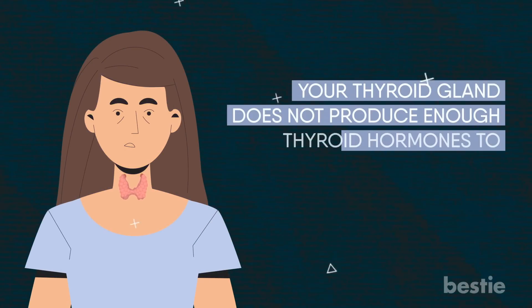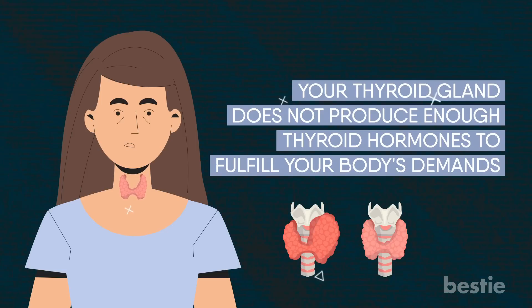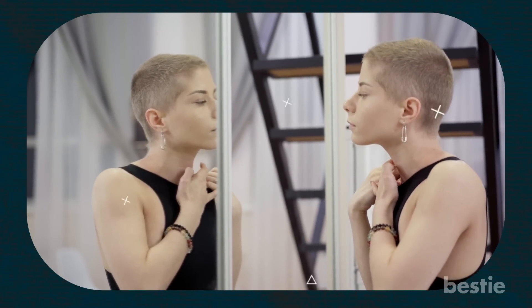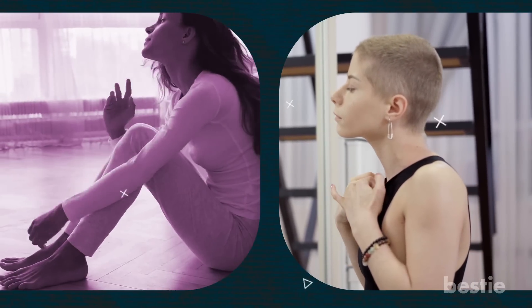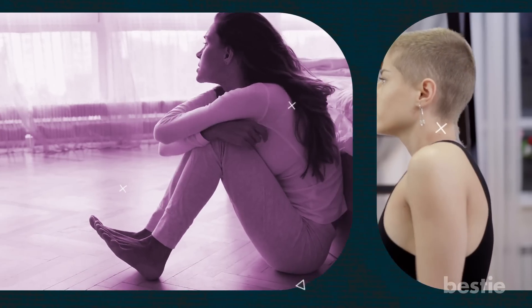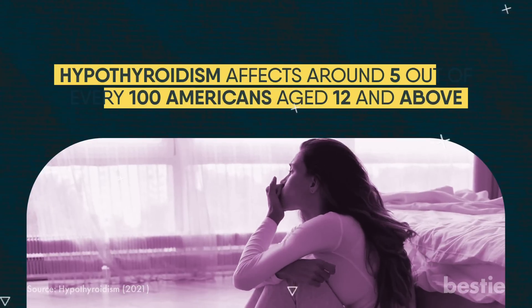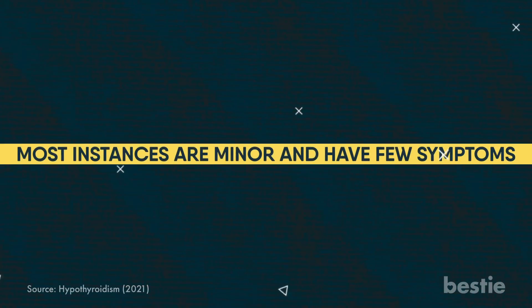When your thyroid gland does not produce enough thyroid hormones to fulfill your body's demands, you have hypothyroidism, or an underactive thyroid. In the early stages of hypothyroidism, there may be no visible symptoms. However, untreated hypothyroidism can lead to a variety of health issues over time. Hypothyroidism affects around 5 out of every 100 Americans aged 12 and above, though most instances are minor and have few symptoms.